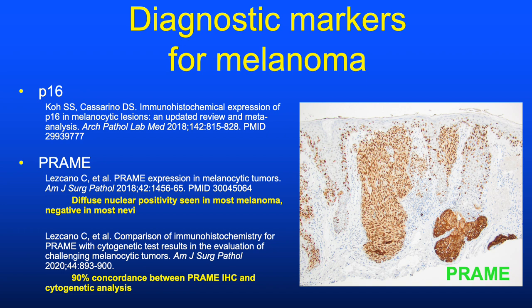S100, Melan-A, and HMB45 tell you whether something is a melanocyte but don't distinguish melanoma from nevus. Two newer markers have gained more traction: P16 and PRAME. P16 shows complete loss of staining in a subset of melanomas, whereas nevi are positive—a surrogate marker for biallelic loss of the CDKN2A gene.